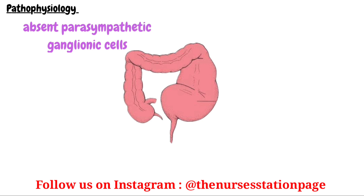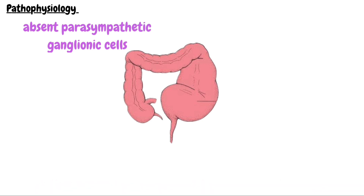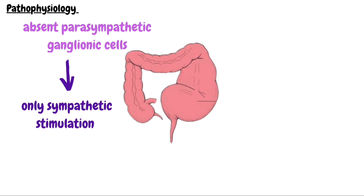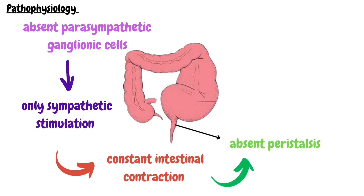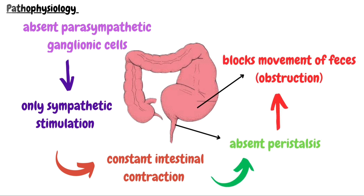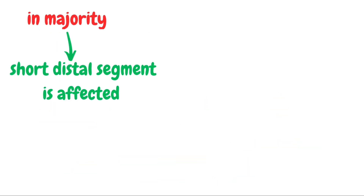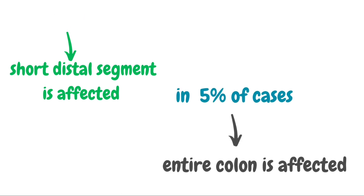But in Hirschsprung's disease, there is absence of parasympathetic ganglionic cells in the nerve plexus, resulting in only sympathetic stimulation. The intestines are unable to relax and remain in a state of constant contraction. Ultimately, the result is lack of peristalsis, which blocks the movement of feces. In the majority of cases, the short distal segment of the colon is affected; however, in five percent of cases the entire colon is affected.